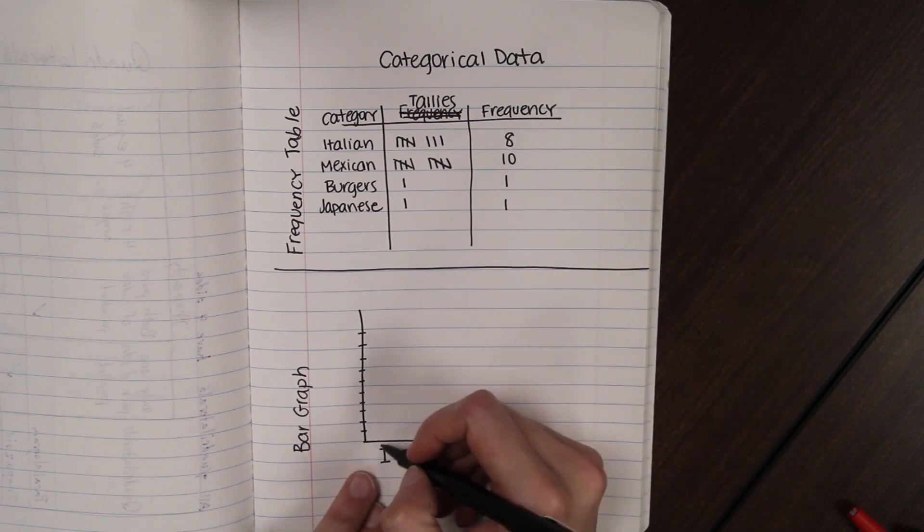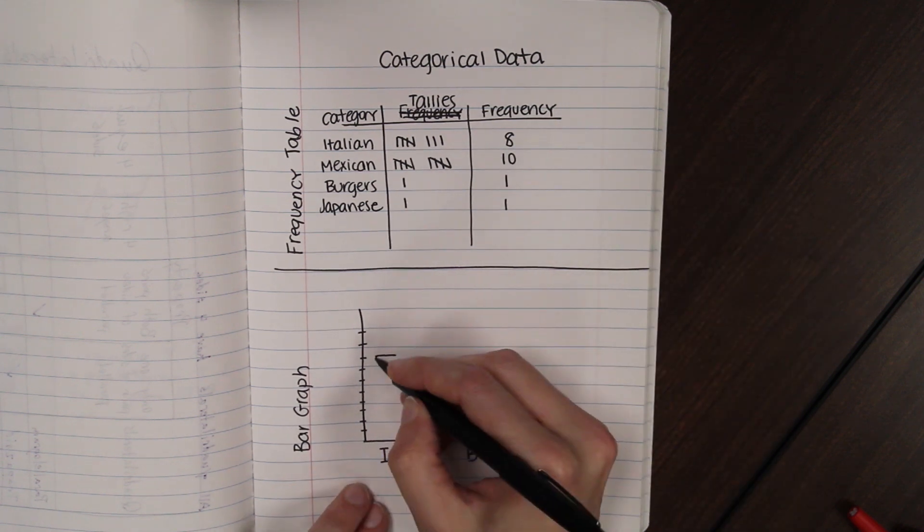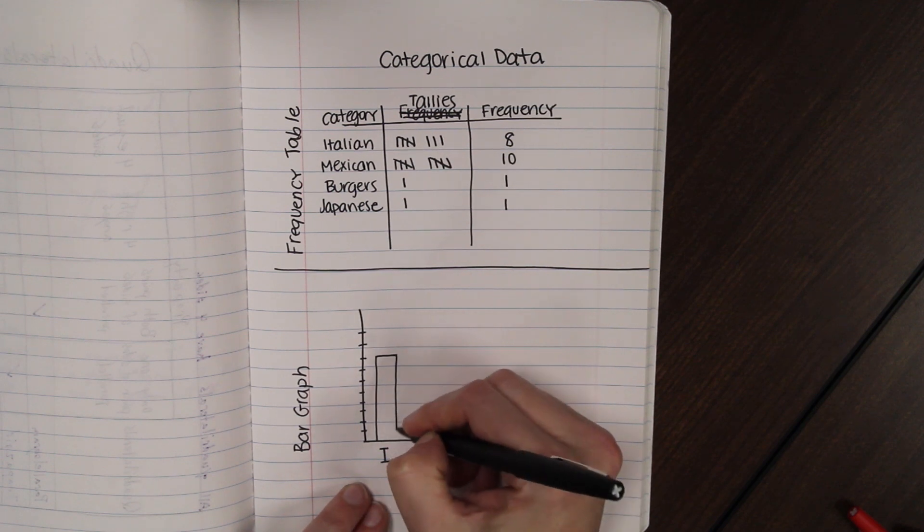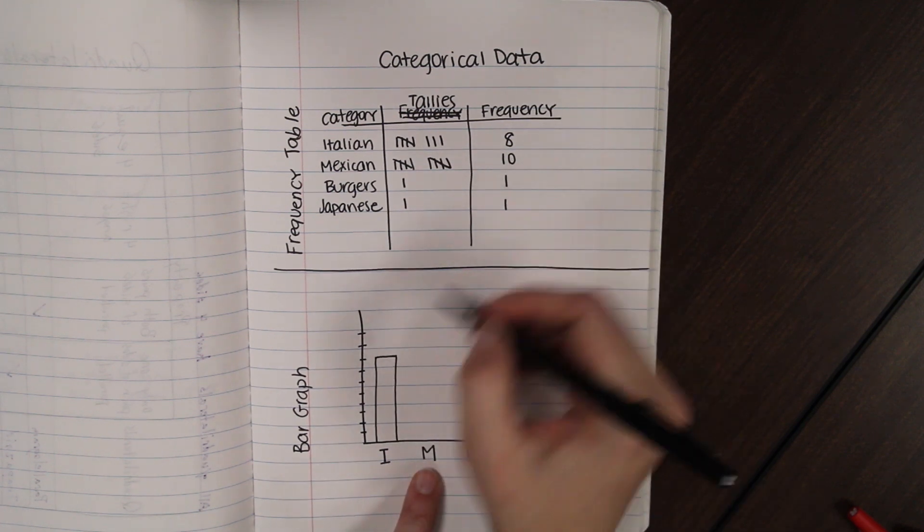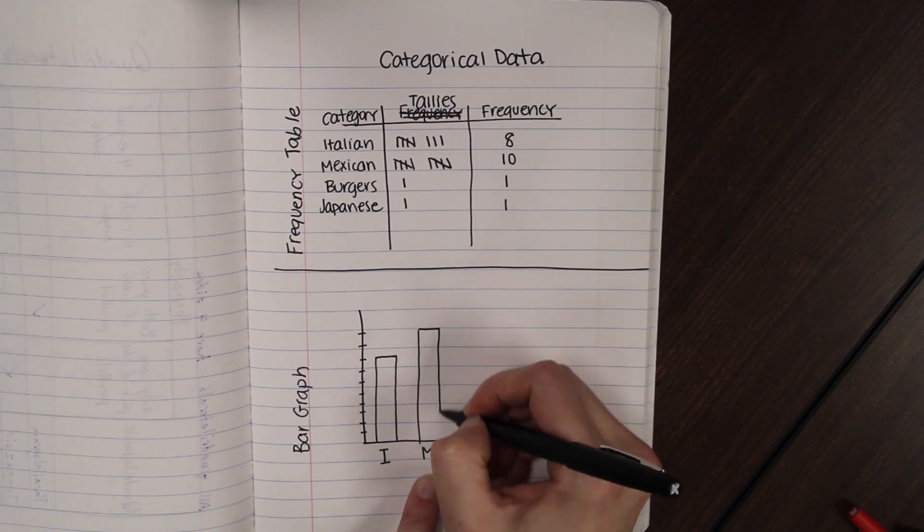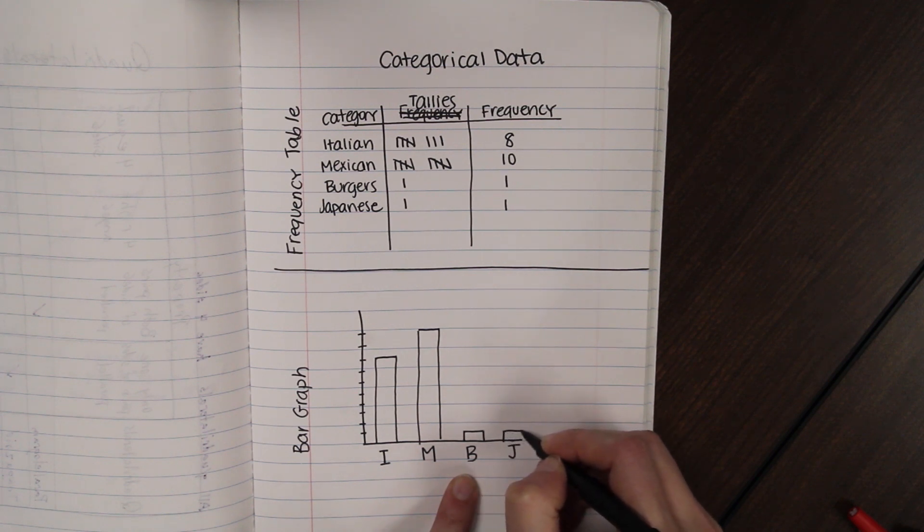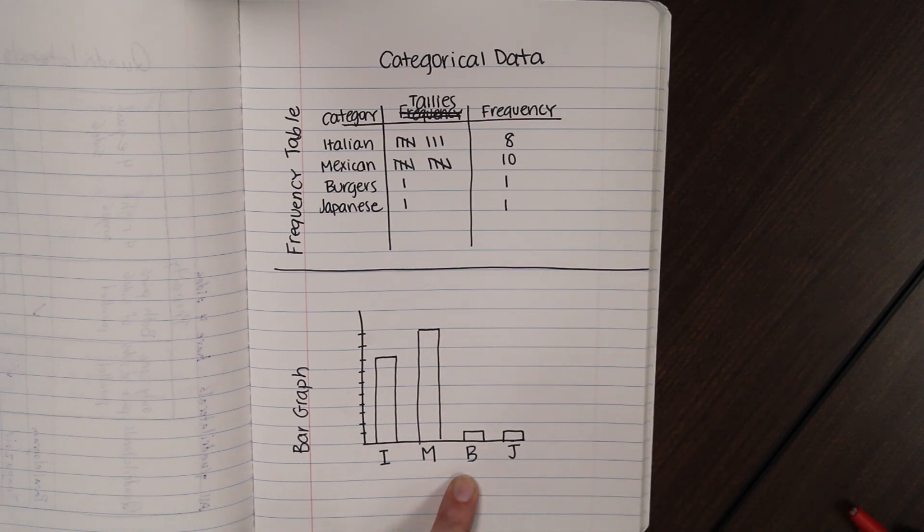So if Italian was eight, we want to take our Italian bar all the way up to eight. Drop it down. Mexican all the way up to ten. Burgers and Japanese each at one. All right.